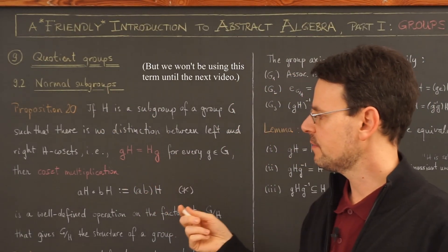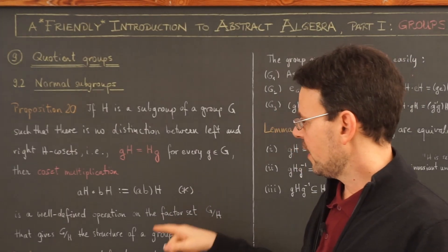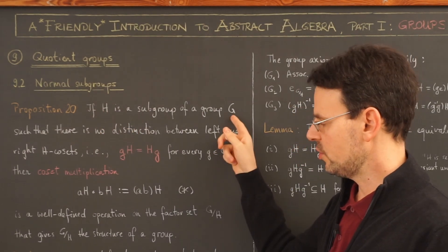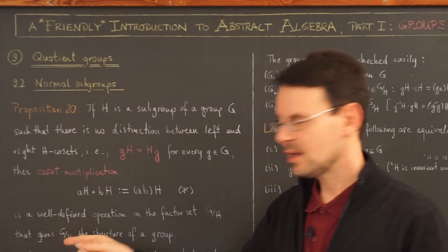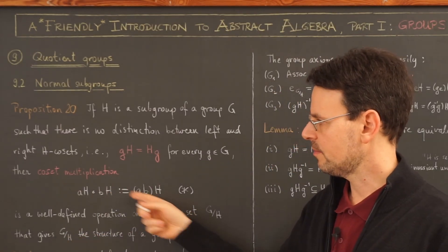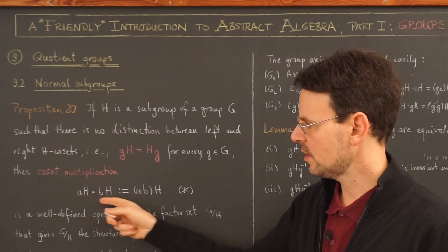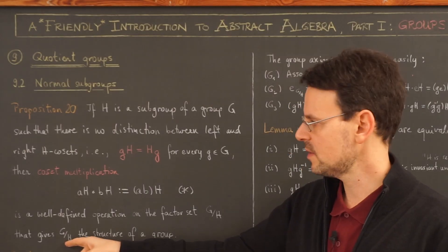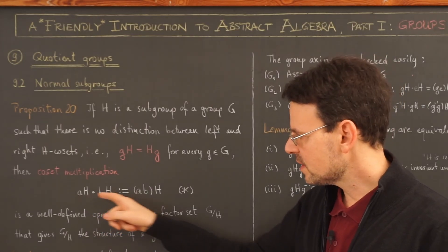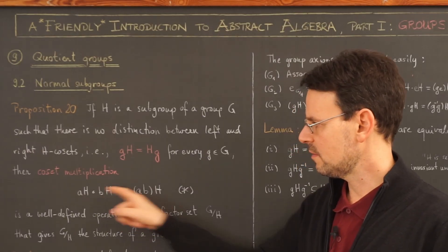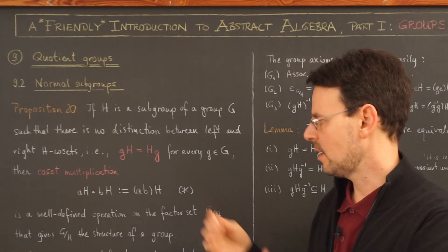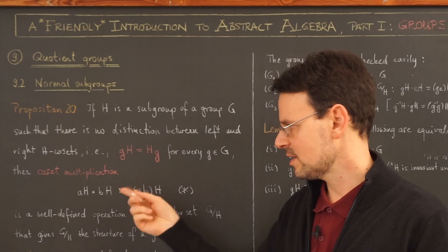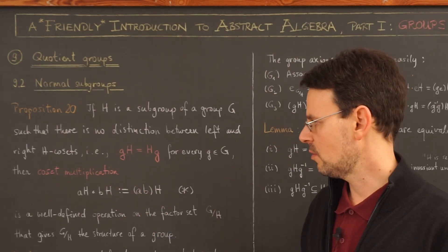If you remember the last video, we saw that the factor set, if I take a subgroup H of a group G, does not automatically become a group under the natural operation of coset multiplication — where I take two left cosets, multiply two representatives, and take the respective coset with respect to H. And we saw that this does not need to work when the group is non-commutative.